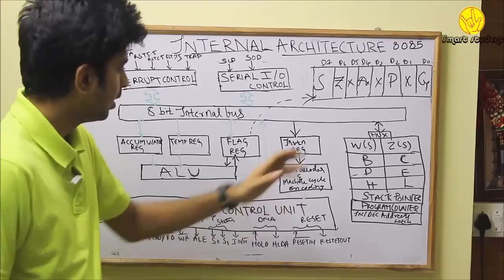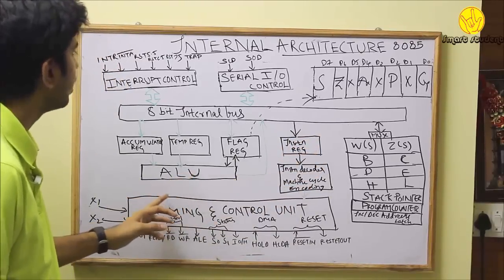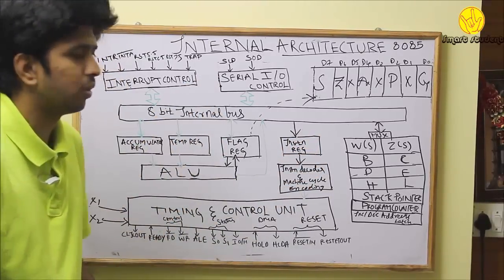It is basically divided into 5 important sections: Register section, ALU, Timing and Control Unit, Interrupt Control, and Serial Input Output Control.